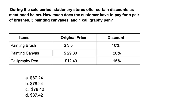Moving on: during a sale period, a stationary store offers certain discounts as mentioned below. How much does the customer have to pay for a pair of brushes, three painting canvases, and one calligraphy pen? Take a look at the table below. Pause the video, try and work this problem out, and push play when you're ready.